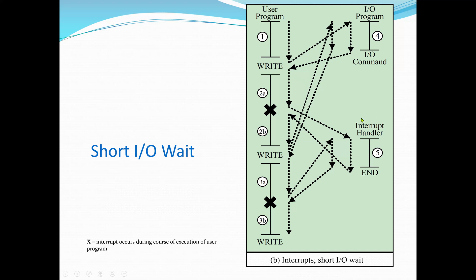With interrupts, we also have the interrupt handler. When the external device becomes ready to be serviced — ready to accept more data from the processor — the I/O module sends an interrupt request signal to the processor. The processor responds by suspending operations of the current program, branching off to a routine to service that particular I/O device known as the interrupt handler, and then resuming the original execution after the device's service is finished.